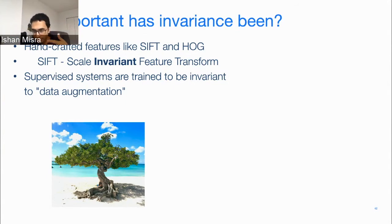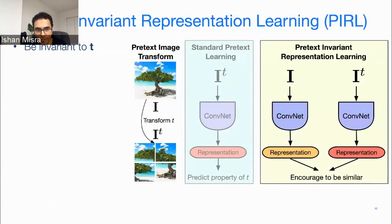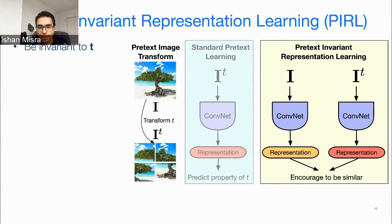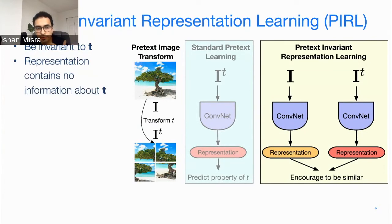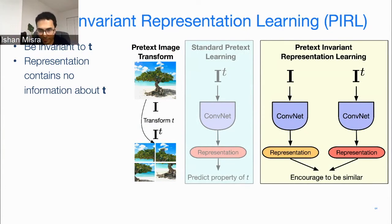In this work, we did something fairly simple: we set up a pretext task but we didn't want to solve the pretext task. We wanted to learn representations that are invariant to the pretext task. You take an input image I and a transformed version I_T, get two representations from them, and try to encourage these representations to be similar. By doing so, the representation contains no information about the transform T. Hopefully, this invariance makes our features more generalizable — no matter the input perturbation applied, my feature is going to be more stable or constant.